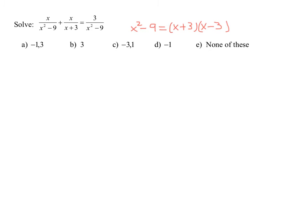So now we need to rewrite our equation putting in our factored denominators. So I'm going to have x over instead of x squared minus 9 I have x plus 3 x minus 3